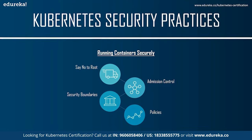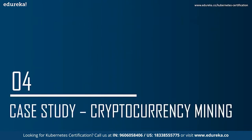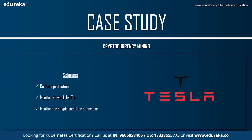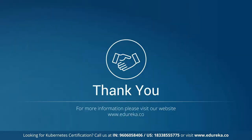For the case study: a famous attack on Tesla exploited control plane insecurities to allow hackers to use the company's resources to mine cryptocurrency. Additional research shows other approaches that would-be miners are attempting. Ensuring that only trusted images can run in your cluster would prevent a bad actor with approved access from running an unexpected mining image. Runtime protection can add another layer of defense — even if an approved image has a vulnerability that allows code injection, that code cannot be executed. Monitoring for unusual activities such as unexpected CPU usage and unexpected resource scaling can help you spot when your resources are being used by an attacker.